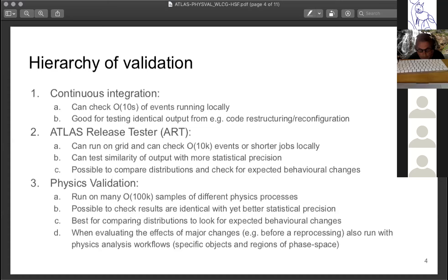This is typically run before a reprocessing of the Monte Carlo data reconstruction, and we can check the effects it has on each physics object definition. In some cases, it's also run with the actual physics analysis workflows. The goal here is to catch effects that impact specific objects in regions of phase space that may not be covered by all the physics processes.